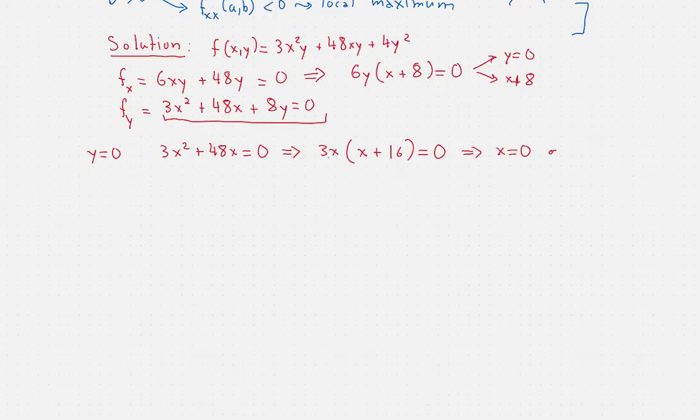That gives us immediately two points. Since we combine them with y equals zero, we have (0,0) as one critical point, and the other will be (-16,0). So we get two critical points from here.